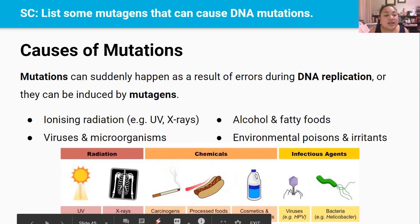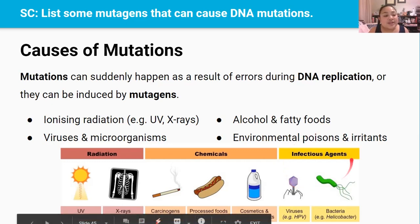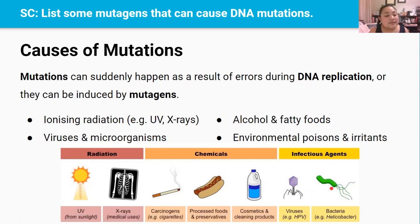Mutagenic chemicals include tobacco smoke, alcohol, and fatty and processed foods, which are all carcinogenic chemicals consumed by humans. Other mutagenic chemicals include BPA in plastics and asbestos found in old buildings. And lastly, infectious agents like viruses and microorganisms like bacteria can mutate the DNA and also cause cancers. For example, the hepatitis B virus can cause liver cancer, and the human papillomavirus, or HPV virus, can also cause cervical cancer in women.